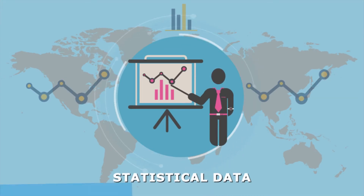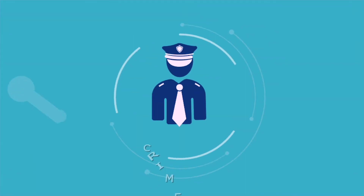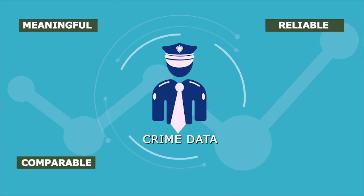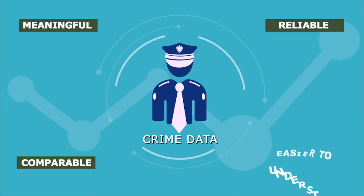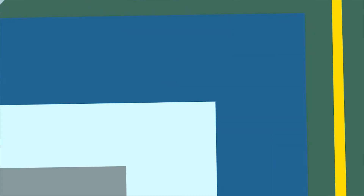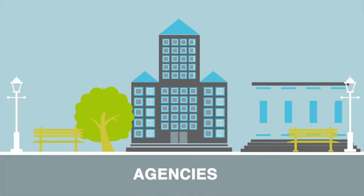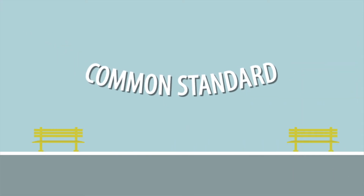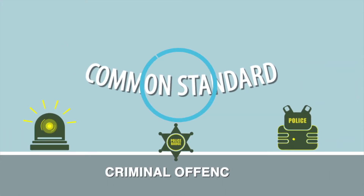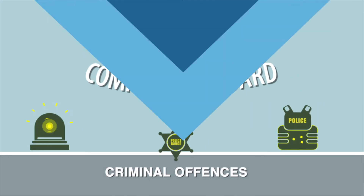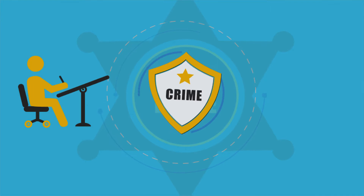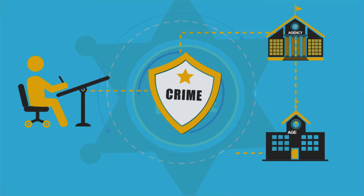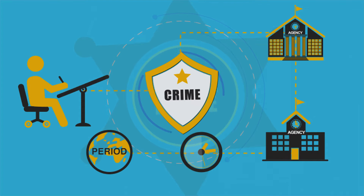But not just any data — crime data that is meaningful, reliable, comparable and of course easier to understand. Until recently, agencies within our criminal justice system did not share a common standard for classifying criminal offenses. For example, a crime would be categorized differently from one agency to the next and from one period to the next.